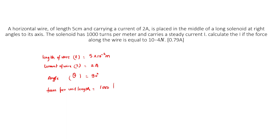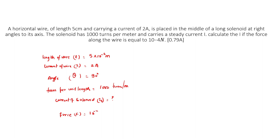The solenoid has 1000 turns per meter and carries a steady current. Current of solenoid Is is to be found. Force F = 10 to the power minus 4 Newton.